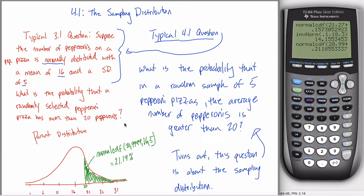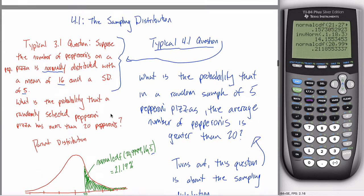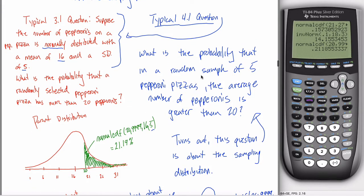All right, in the last video we kind of introduced this idea of the sampling distribution. The main takeaway was that in Chapter 3, you answered questions about a single observation — for example, what is the probability that one randomly selected pepperoni pizza has more than 20 pepperonis on it? That's a question dealing with the parent distribution. In Chapter 4, the question is about a sample of some number of pepperoni pizzas, specifically the average of that sample.